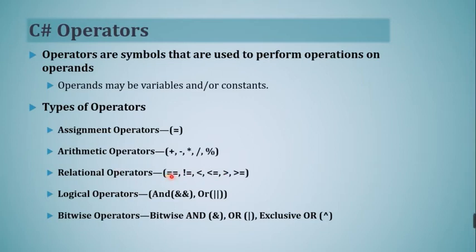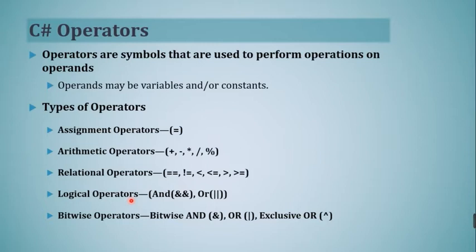Double equal (==) is used to check equality of operands, and the exclamation-equal (!=) is used to check non-equality. Similarly, less than (<), less than or equal to (<=), greater than (>), and greater than or equal to (>=) are relational operators. Next are logical operators, which are used to perform logical operations such as AND and OR. Logical operators operate on boolean expressions whose results are true or false, and are generally used in decision making and loops.